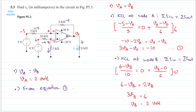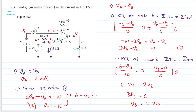From equation 1 we have 3·vA minus v0 equals minus 10. Substituting vA equals 2: 3 times 2 minus v0 equals minus 10, so 6 minus v0 equals minus 10, and therefore v0 equals 16 volts.